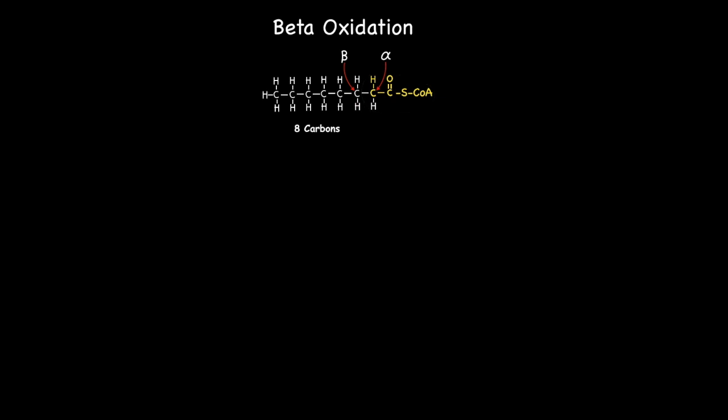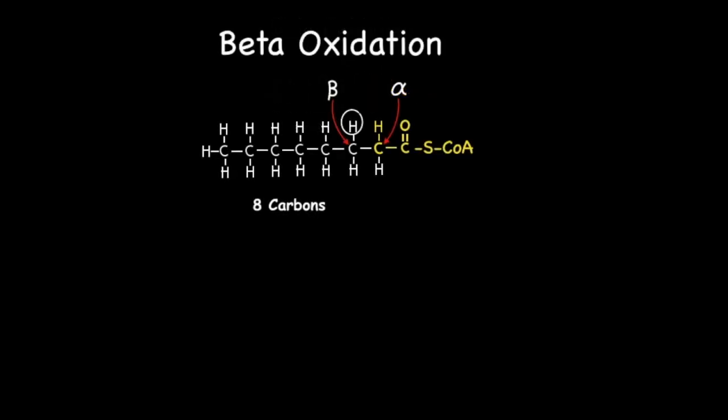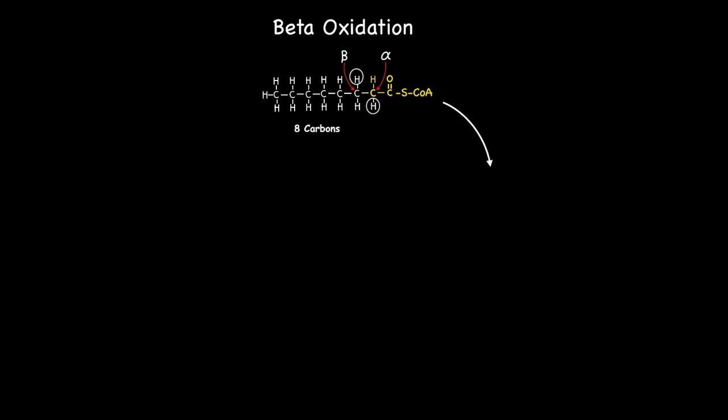Now each beta-oxidation cycle is made up of four separate steps. The first step involves the removal of the circled hydrogen atoms on the beta and alpha carbons. This results in the formation of the following compound.